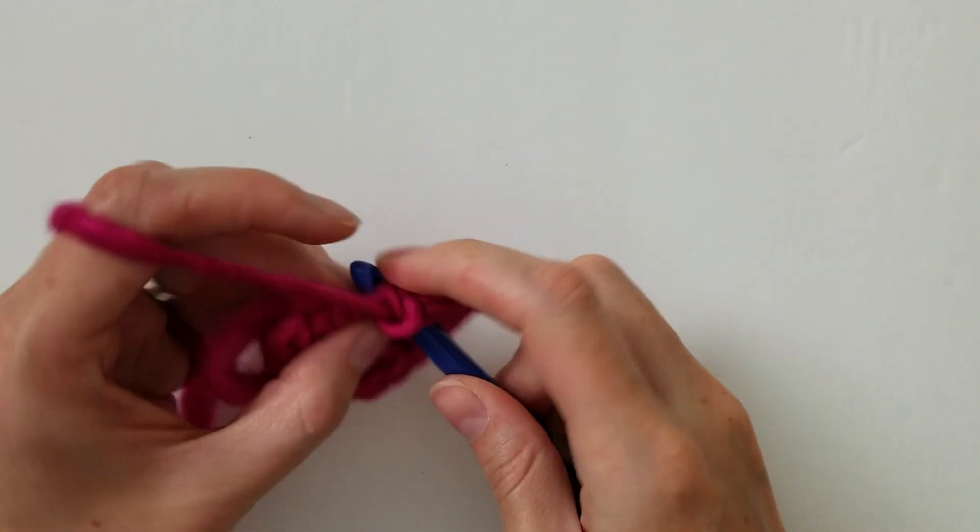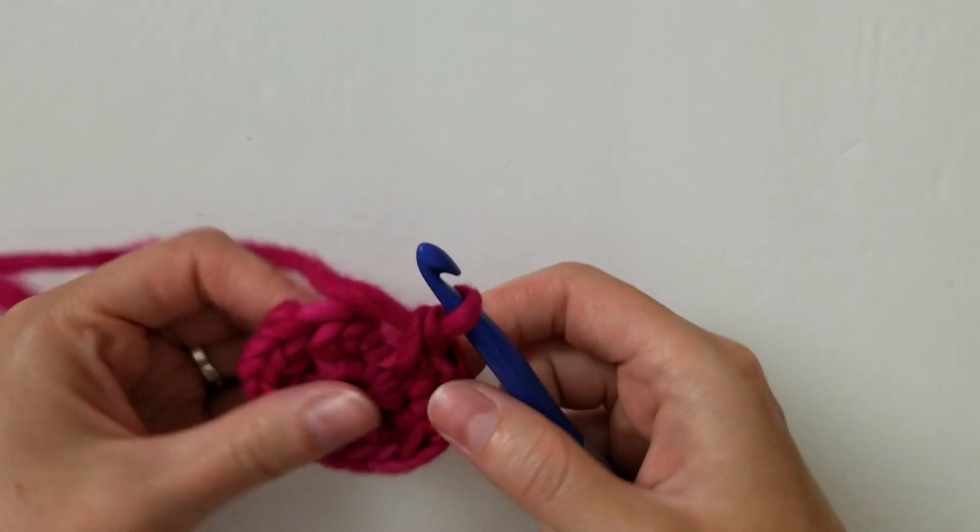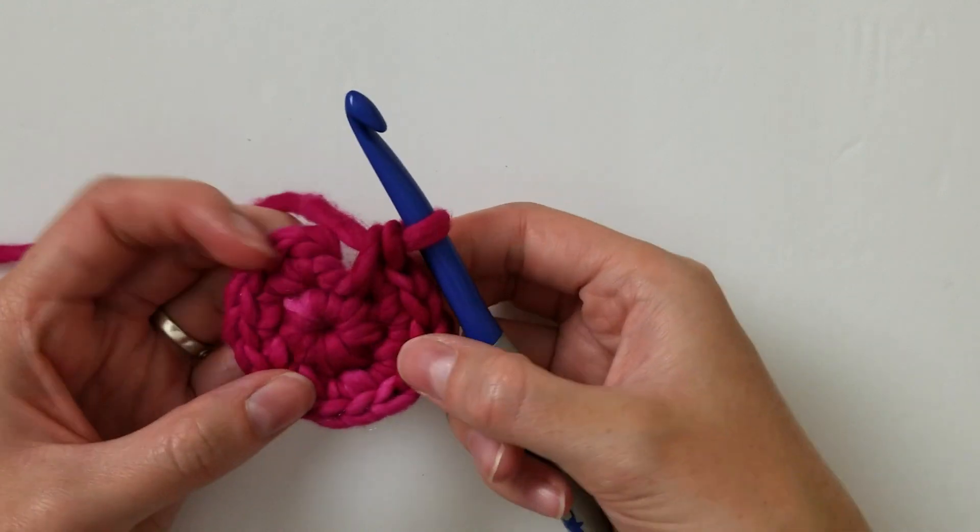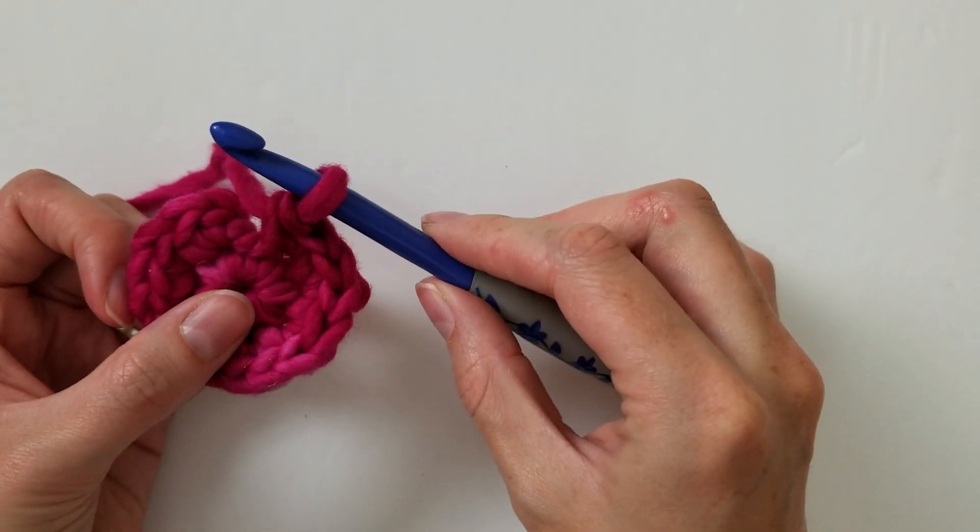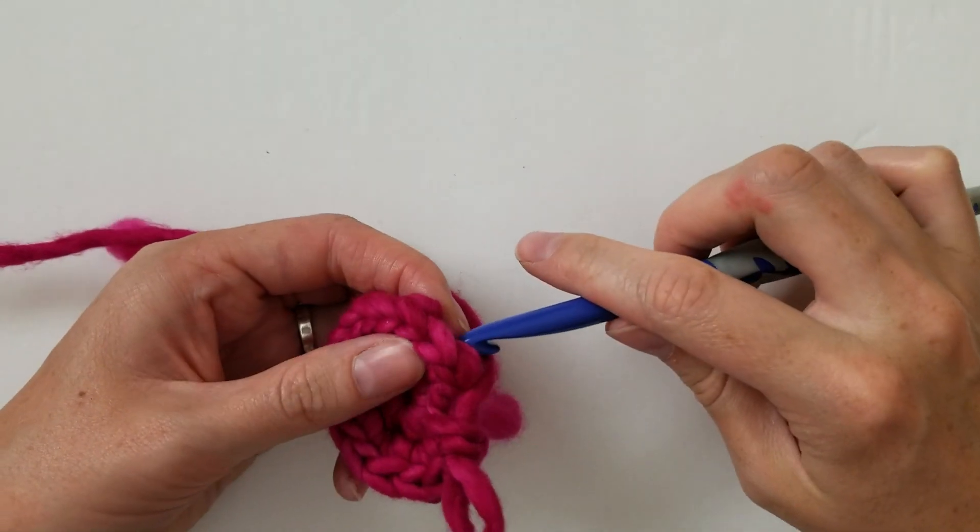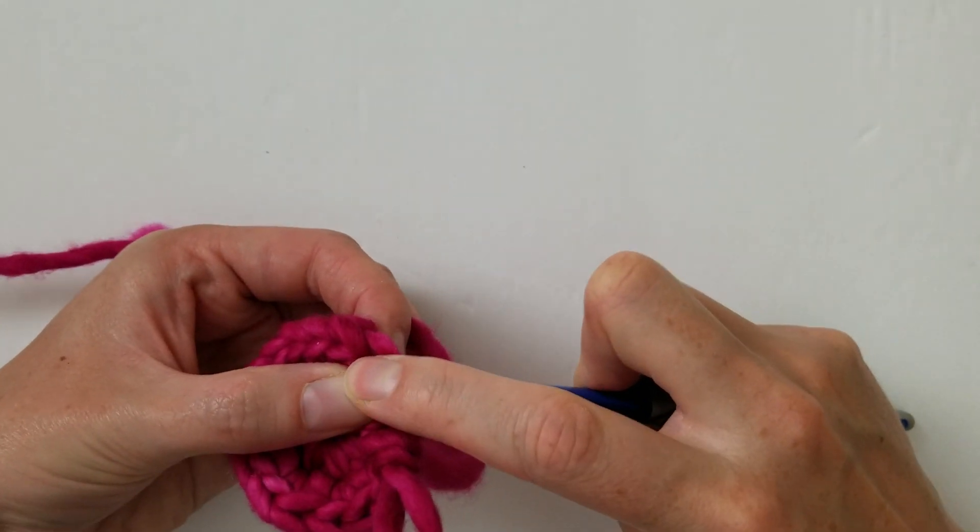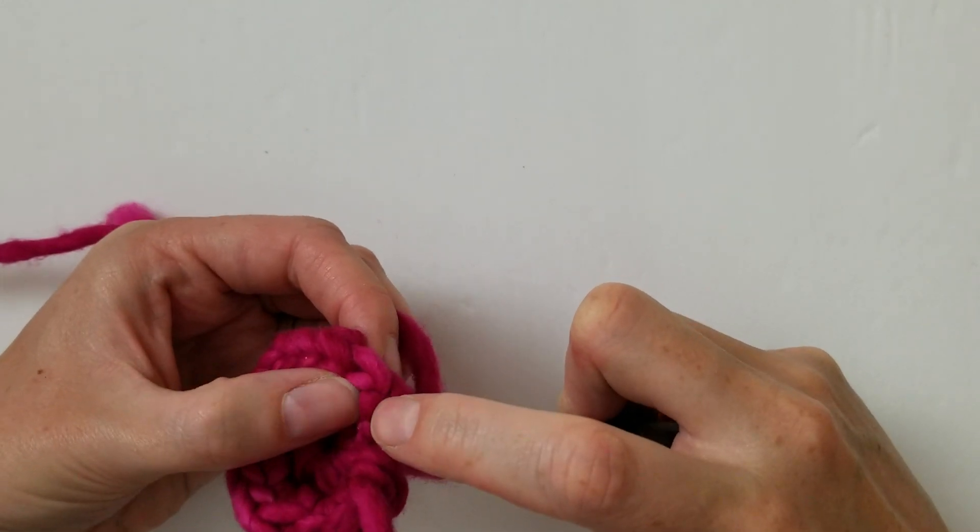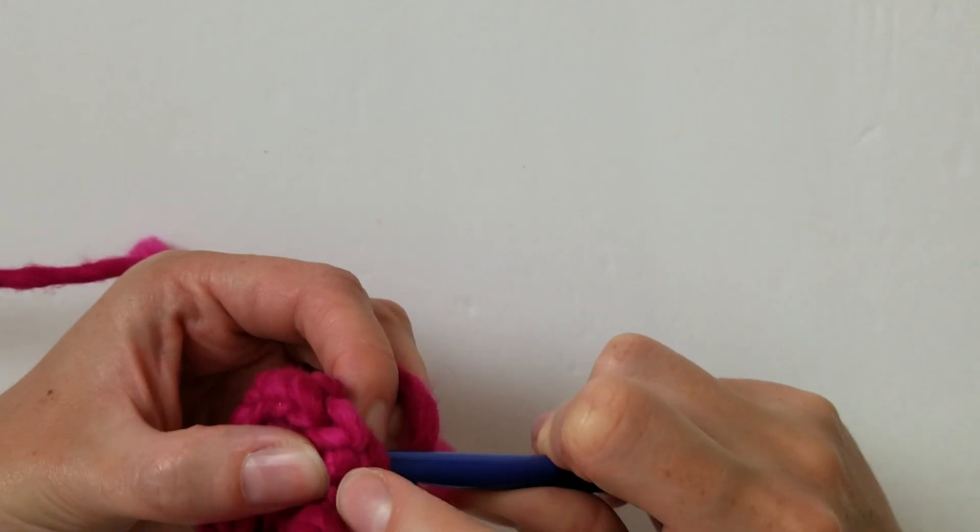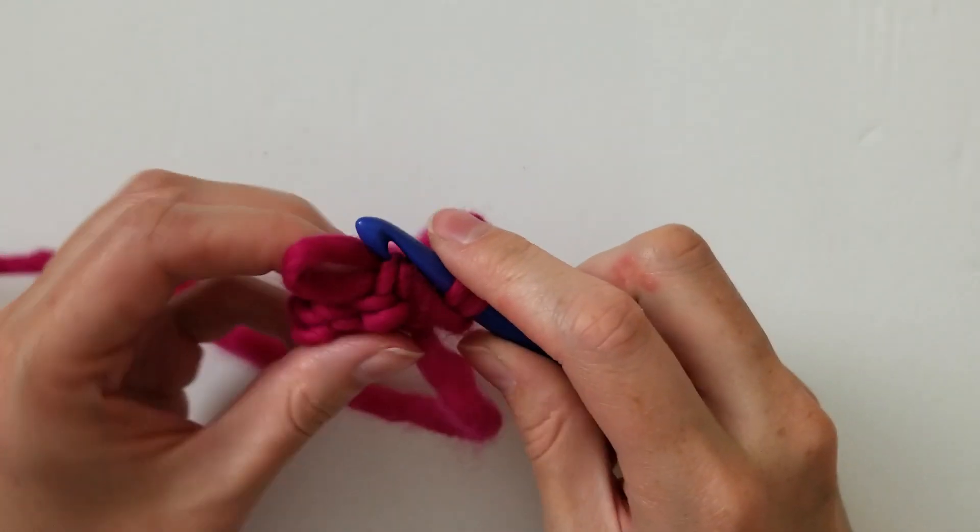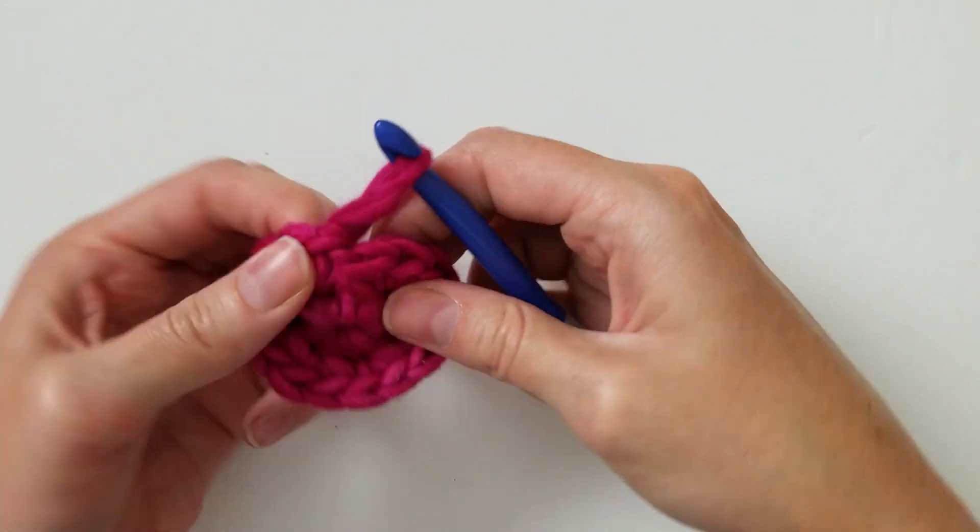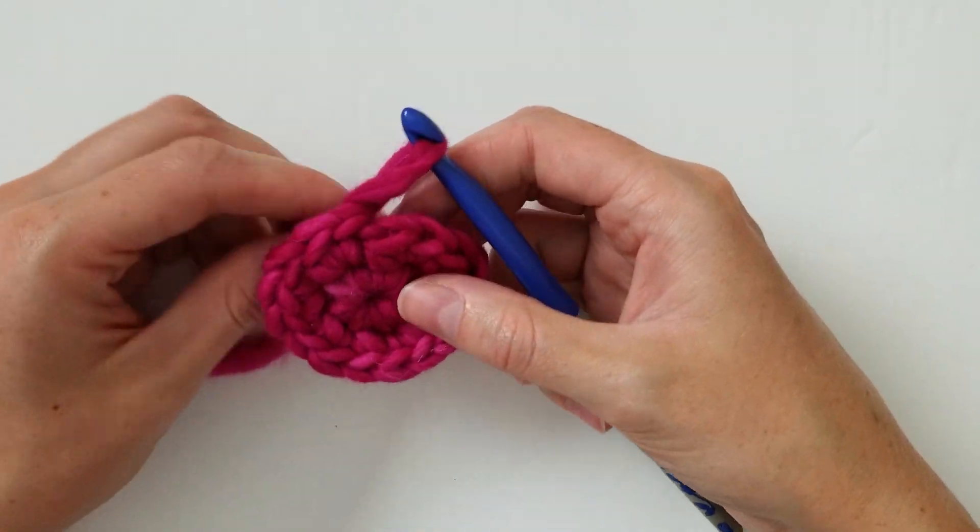Alright, so here I am in the very last increasing stitch. And so once again to join the circle with the invisible slip stitch, pull out your hook, go from the back to the front on the next stitch or that very first stitch from the row, yarn over and pull it through. And it just disappears just like that.